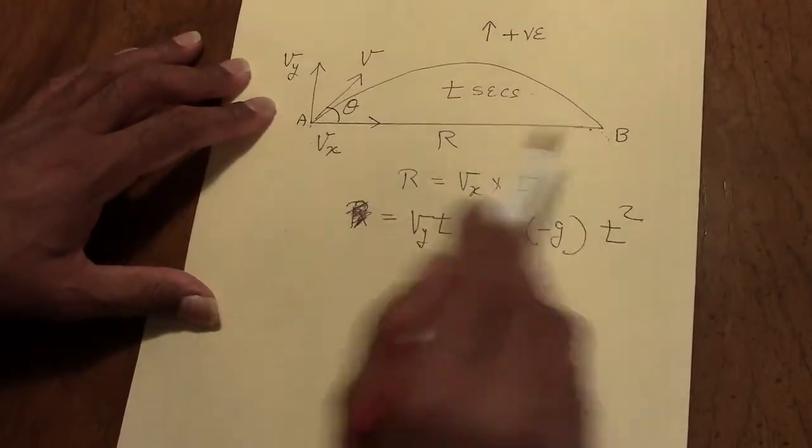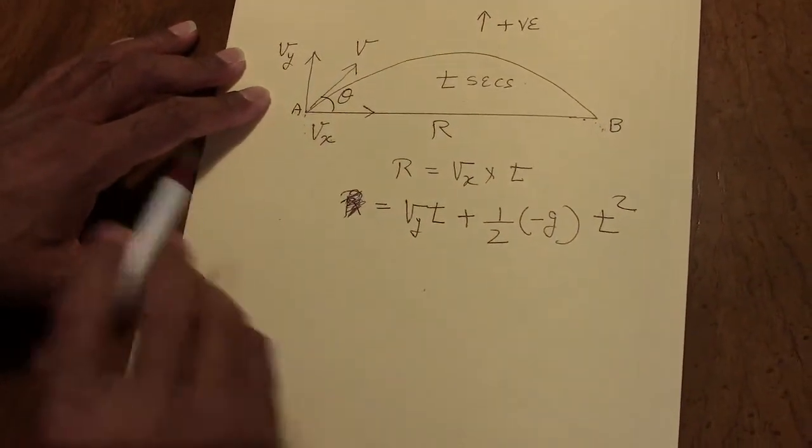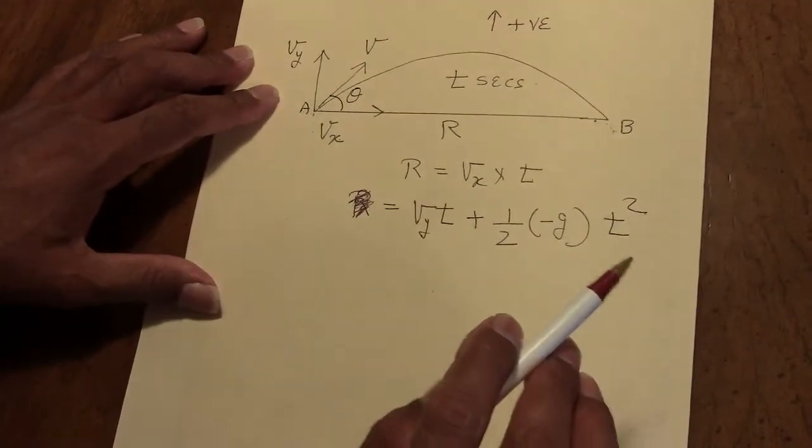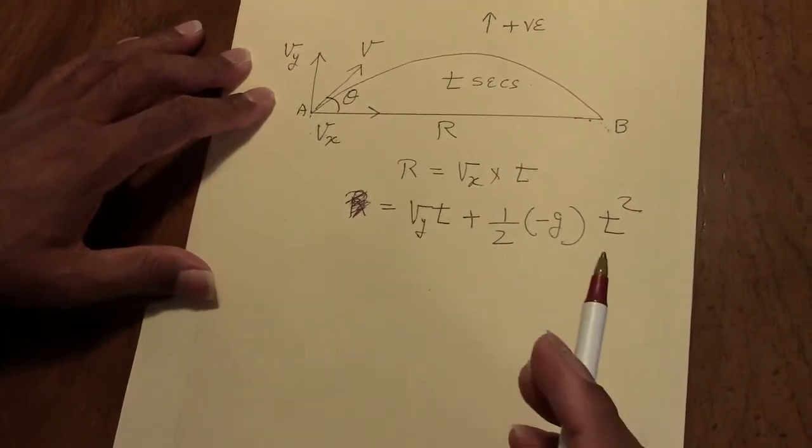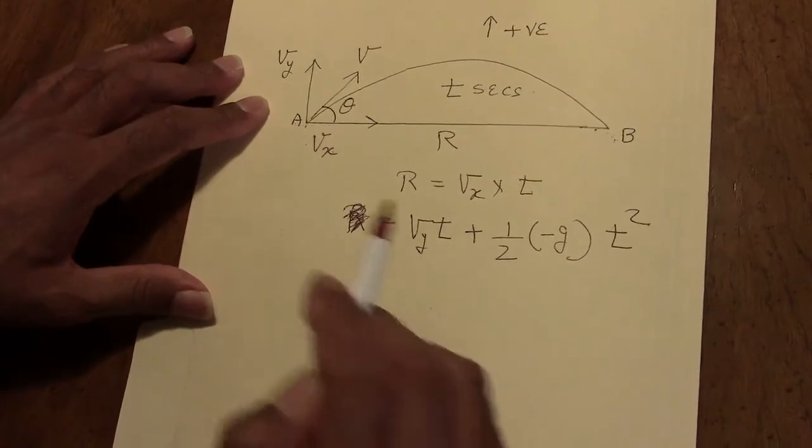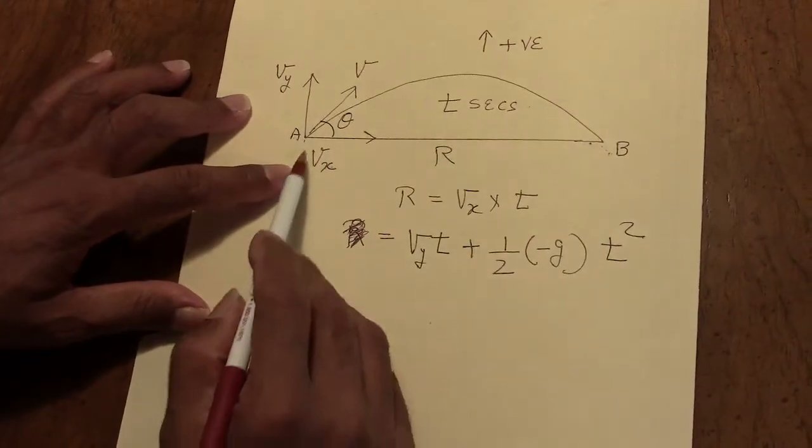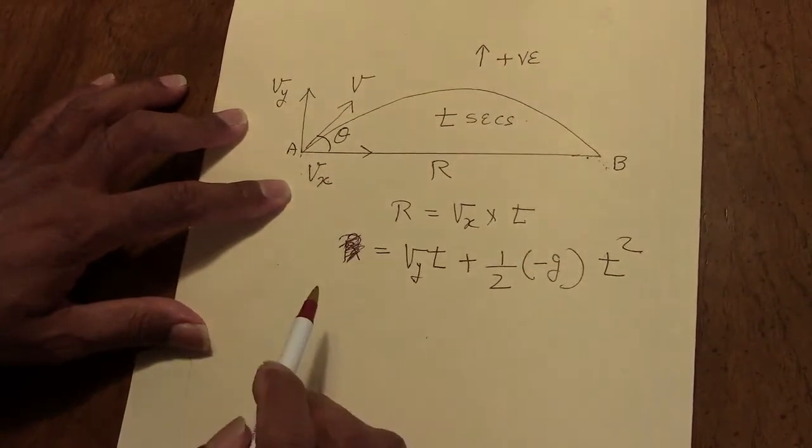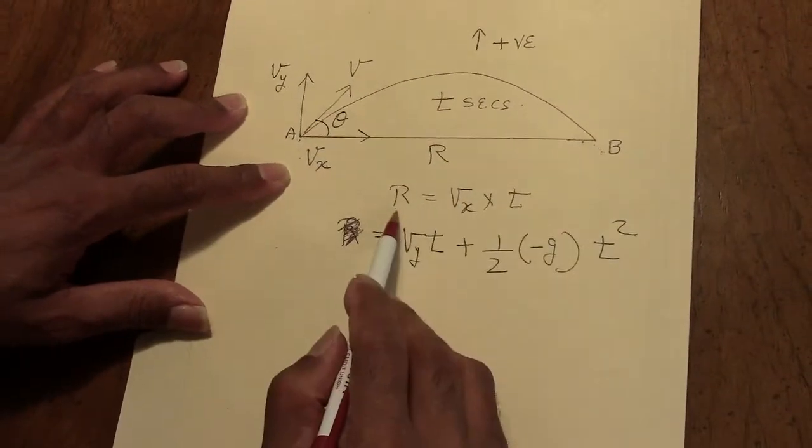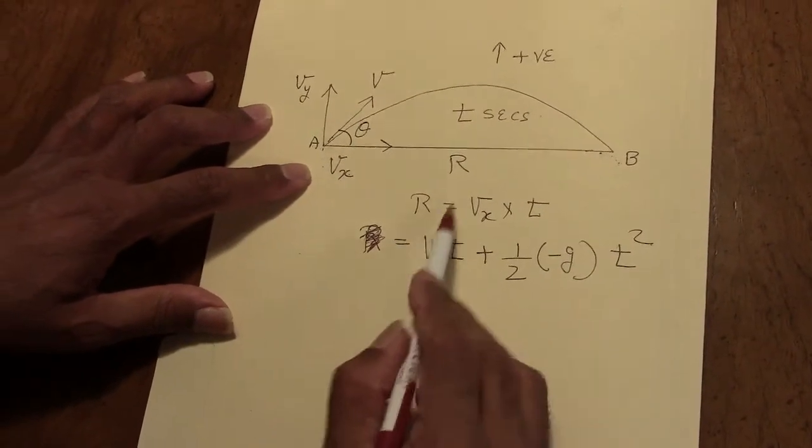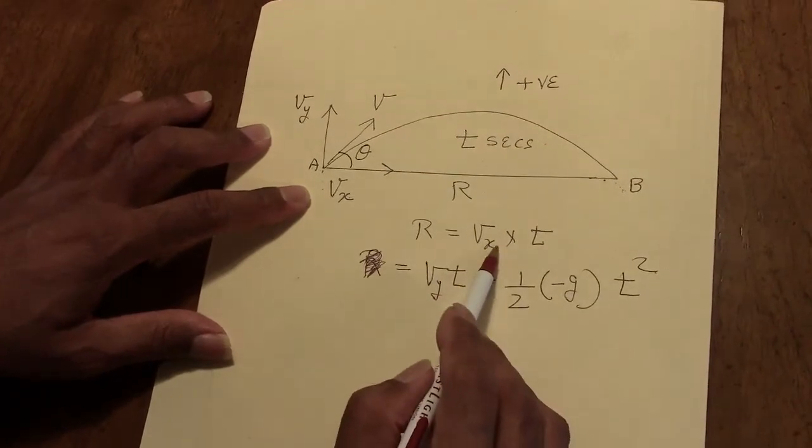In the horizontal direction, the velocity is constant. We are assuming that air resistance is negligible. Therefore, if the projectile was in the air for t seconds, Vx being constant, the distance R traveled by the projectile is Vx times t.